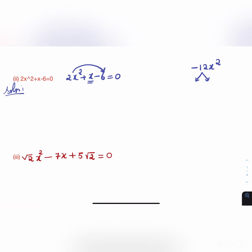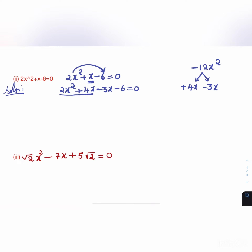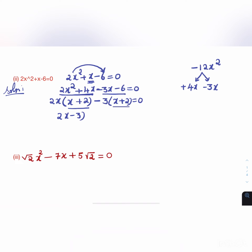Splitting the middle term: 4 × 3 = 12, and 4 - 3 = 1, so we use +4x and -3x. Substituting: 2x² + 4x - 3x - 6 = 0. Grouping: 2x(x + 2) - 3(x + 2) = 0. So x + 2 is the common factor, giving (2x - 3)(x + 2) = 0.